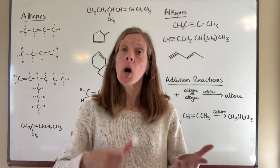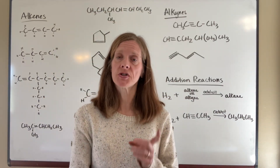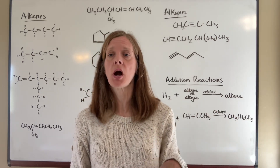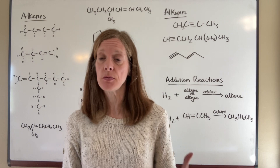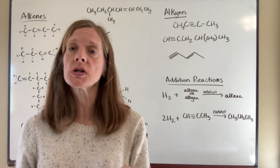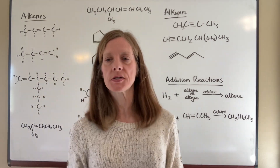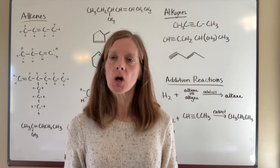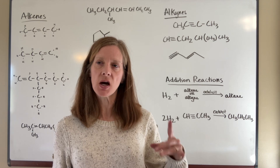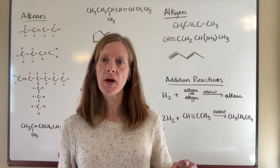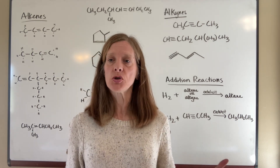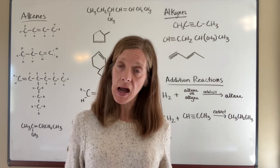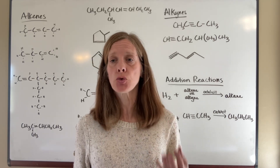Today we're going to be moving on to unsaturated hydrocarbons. The alkanes were the saturated, and now we're going to have the unsaturated hydrocarbons. We're going to learn how to name those and also learn a simple reaction that takes place with them. There are two classifications: an alkene, which contains a double bond, or an alkyne, which contains a triple bond.